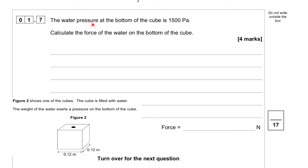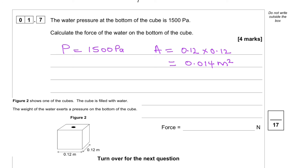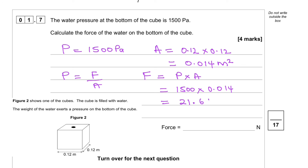Question 1.7: The water pressure at the bottom of the cube is 1500 Pascal. Calculate the force of the water on the bottom of the cube. The pressure given is 1500 Pascal, and the area of the cube base is 0.12 times 0.12, which equals 0.014 meter squared. Since pressure equals force over area, force equals pressure times area: 1500 times 0.014 equals 21.6 newtons.